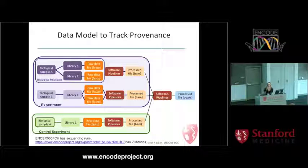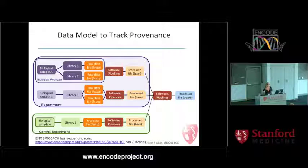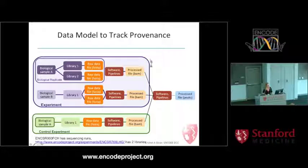One of the key things we care about in the ENCODE DCC is tracking the provenance of data and where it came from. We're trying to get away from files named things like 'heart_filtered_trimmed_chip' and instead track every detail of what went into making a processed file. We track the pipelines and software that went into a file, all the process files that fed into it, going all the way back to the raw data, replicate structure, particular biosamples, and which experiments it belonged to.